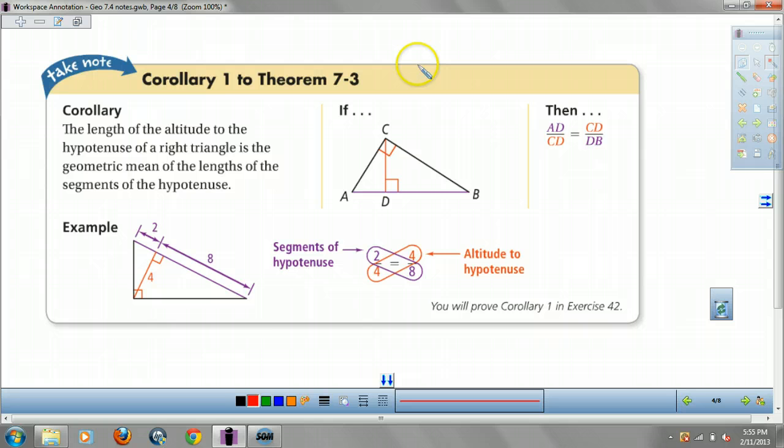Let's do a corollary to the theorem. The length of the altitude of the right triangle is the geometric mean of the lengths of the segments of the hypotenuse. AKA, the geometric mean of AD and DB equals CD.